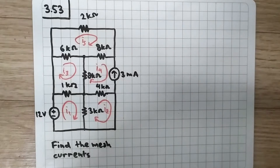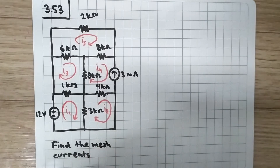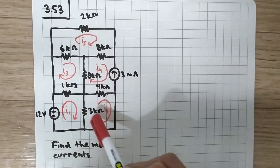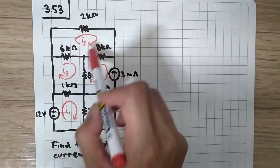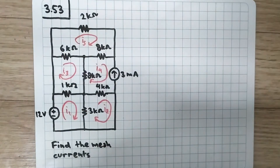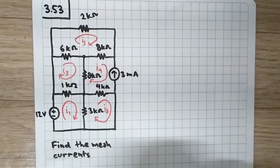We are going to solve problem 3.53 from Sadie Kubuk. The question is to find the mesh currents i1, i2, i3, i4, and i5. We will start from the easiest loops.